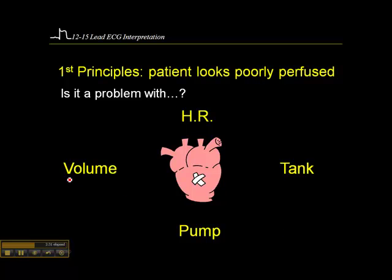If heart rate is not the issue, we have to look for other potential causes such as volume depletion — as in hypovolemia, severe dehydration, or significant burns. If that's not the case, we may be looking at a pump problem, such as left ventricular failure with signs like pulmonary edema and hypotension, or acute right ventricular failure presenting with hypotension, bradycardia, clear chest, and JVD. Is it a tank problem — for example, significant vasodilation from anaphylaxis or neurogenic shock? Or is it obstructive shock such as tension pneumothorax, which compresses the inferior vena cava and reduces venous return to the heart?